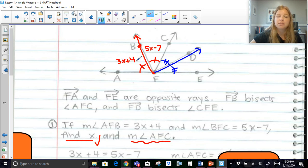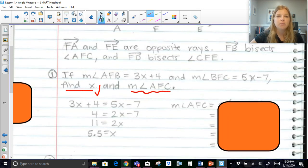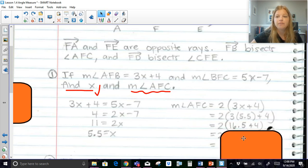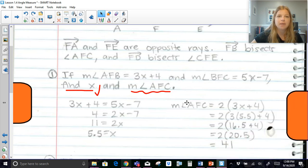Since I know that these are equal to each other, I could do two times the measure of one of the angles. So two times 3X plus 4, or two times 5X minus 7. And they would all get me the same result. So that's actually what I did. I did two times one of the half angles. Then I would substitute in my 5.5. I would do all of my algebra work here. And I end up getting the measure of that angle is 41.